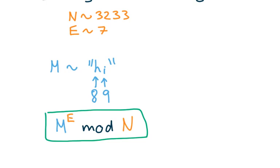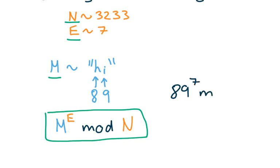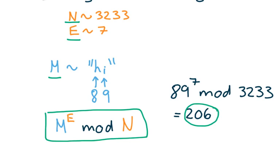This is the expression used to encrypt messages in RSA encryption. Note how the only values required are the two public key values of e and n. So in our example, n was 3,233, e was 7, and m was 89. So plugging into this expression: 89 raised to the seventh power mod 3,233. This comes out to be 206. So 206 is the sender's encrypted message.